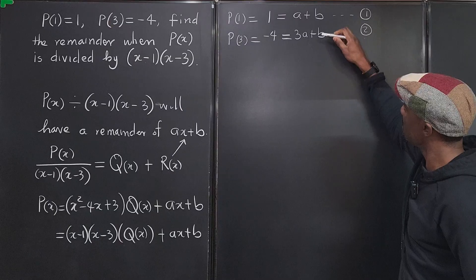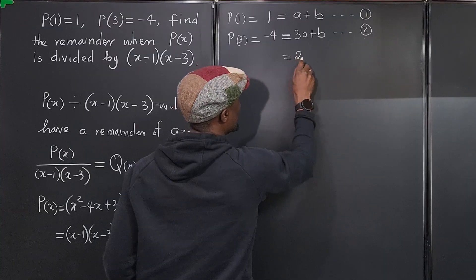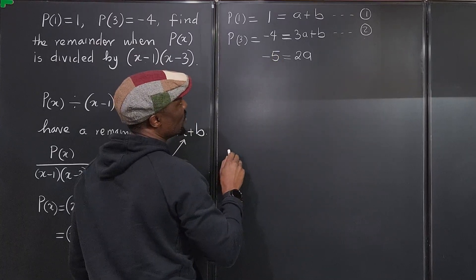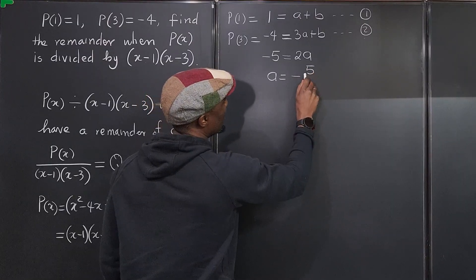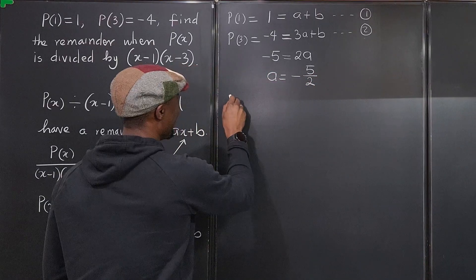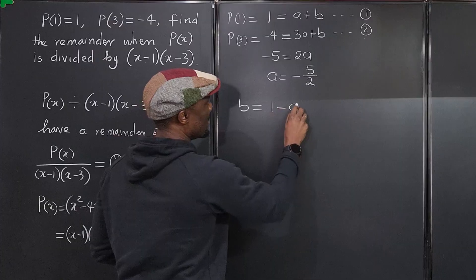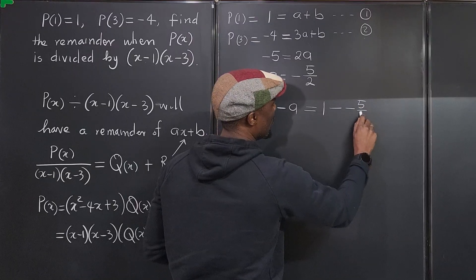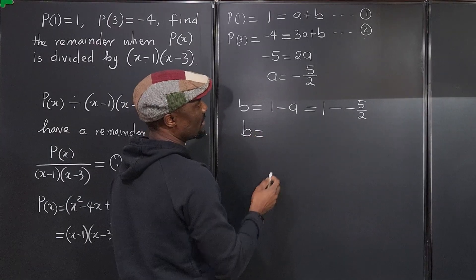To solve the system, we subtract equation one from equation two to eliminate b. We get 2a = -5, so a = -5/2. Then b = 1 - a = 1 - (-5/2) = 7/2.